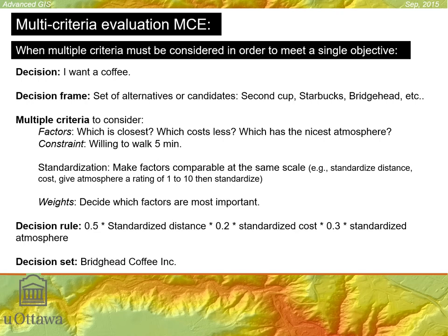Here's an example of a decision: I want a coffee. The decision frame is all the different places that sell coffee — Second Cup, Starbucks, Bridgehead, etc. So you have the decision — I want a coffee — and the decision frame is all the possible coffee stores or cafes you could go to.